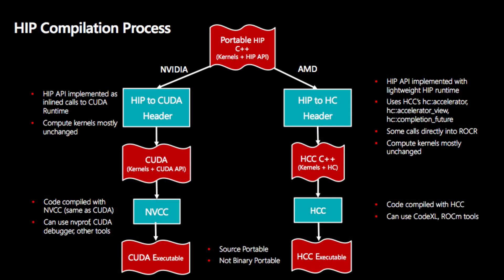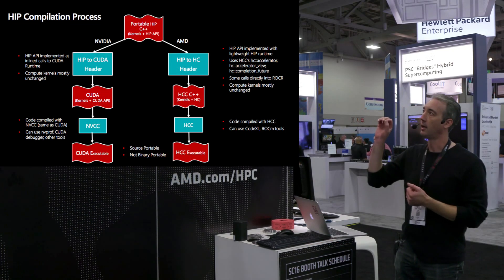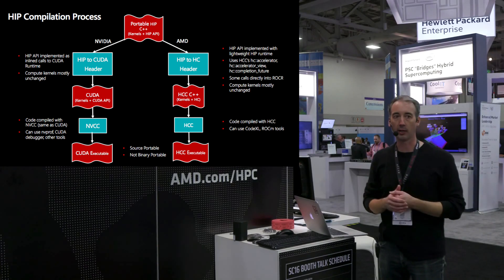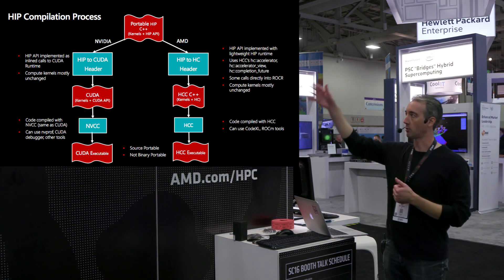This shows how things actually execute. With an application that's been ported, you choose which platform to compile with. On the CUDA path, we deliver the same performance because we use the same toolchain — the conversion from HIP code to CUDA is via header files, mostly inline functions. You go through NVCC and get the same experience as native CUDA. On the AMD path, you use our C++ compiler called HCC, and get access to the ROCm tools — the ROCm profiler and ROCm debugger.